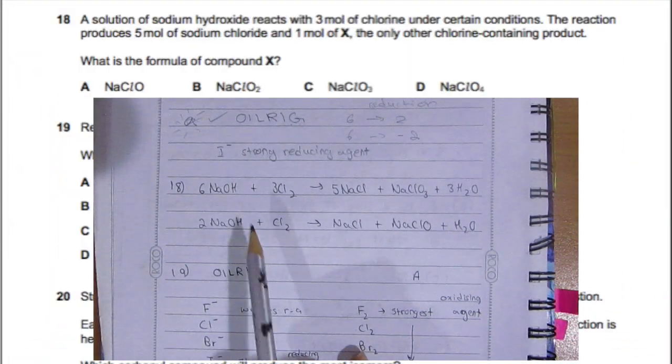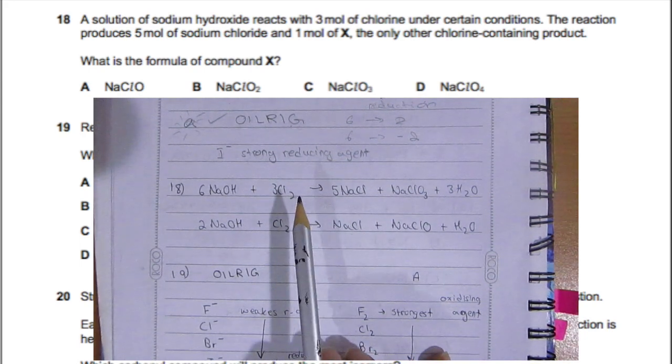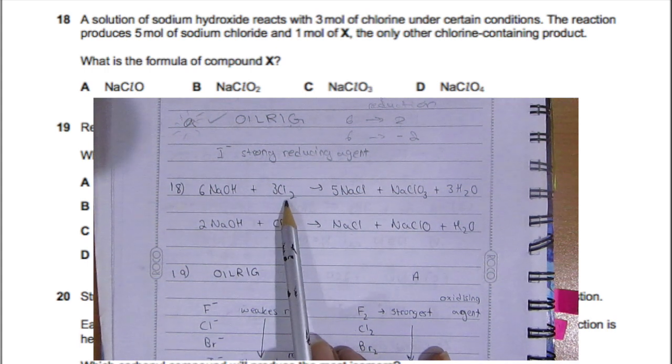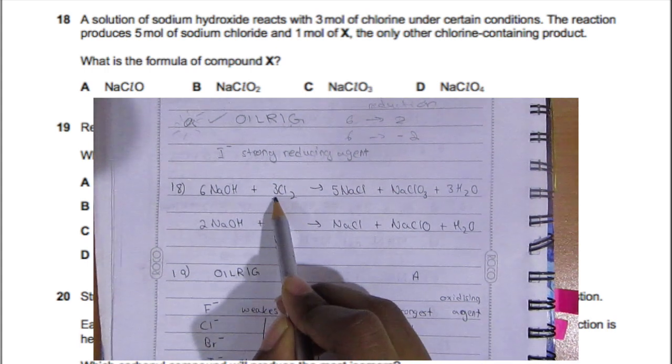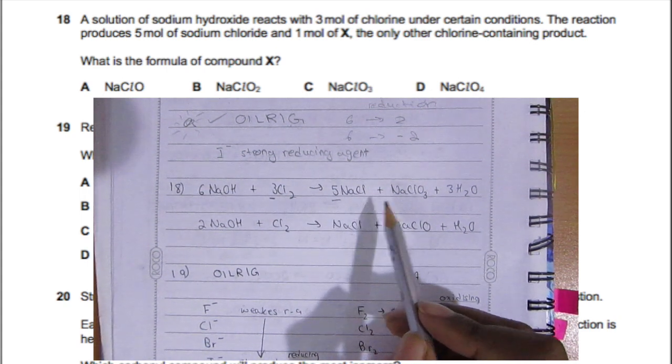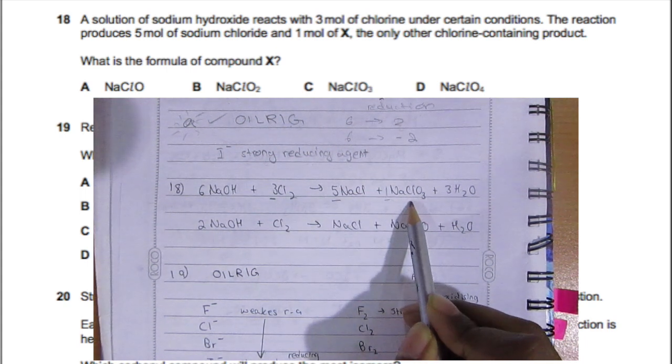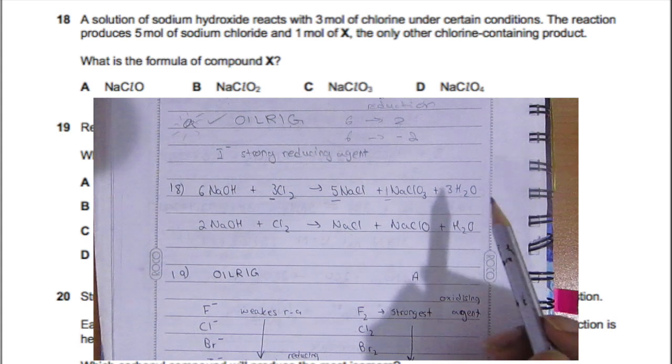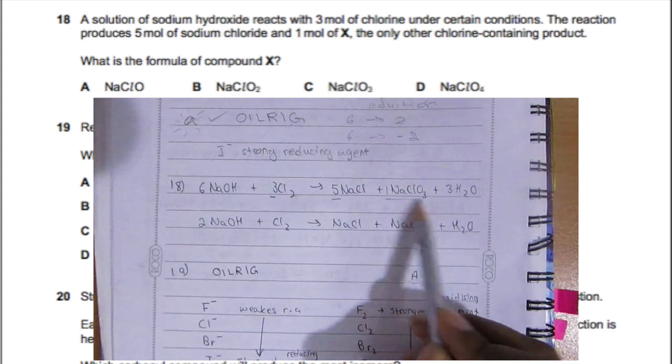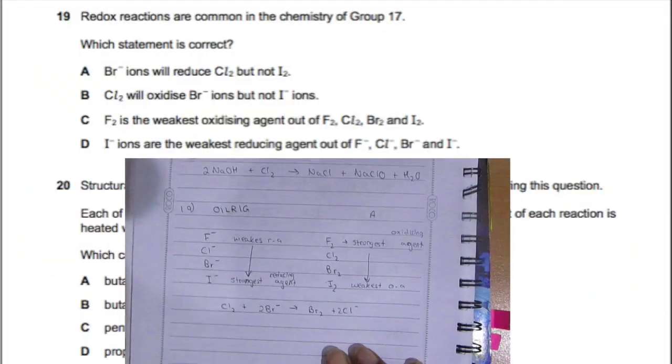Question 18: You should know these two equations and memorize them—you're expected to know them. It tells us that three moles of fluorine react with a solution of sodium hydroxide, and the reaction produces five moles of sodium chloride and one mole of X. If you remember these equations, you realize it's talking about the first one I wrote, not the second. So that one mole of X is NaClO3, which is option C.